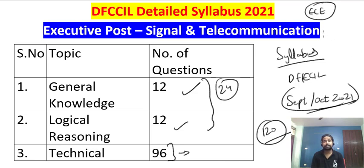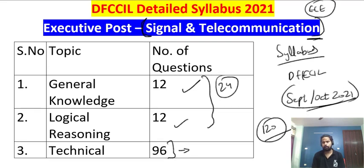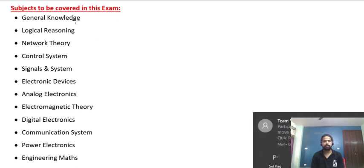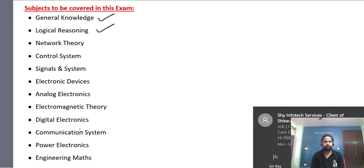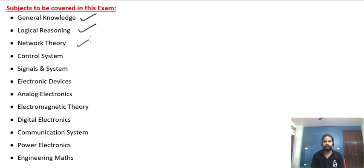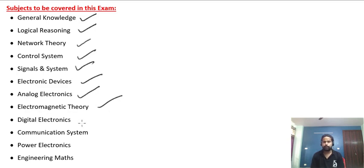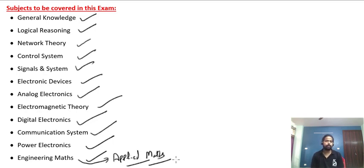Now we will talk about the subjects that should be covered for this post, and then we will see the analysis from previous DFCCIL exams of 2016 and 2018. The subjects to be covered are: General Knowledge, Logical Reasoning, Network Theory, Control System, Signaling System, Electronic Devices, Analog Electronics, Electromagnetic Theory (EMT), Digital Electronics, Communication System, Power Electronics, and Engineering Mathematics — which is your applied math from diploma, covering integration, differential equations, probability, etc.